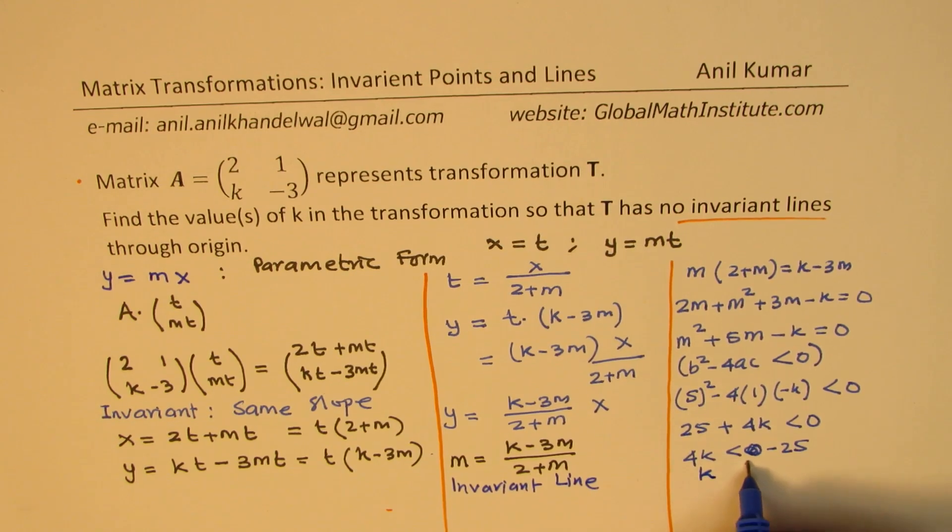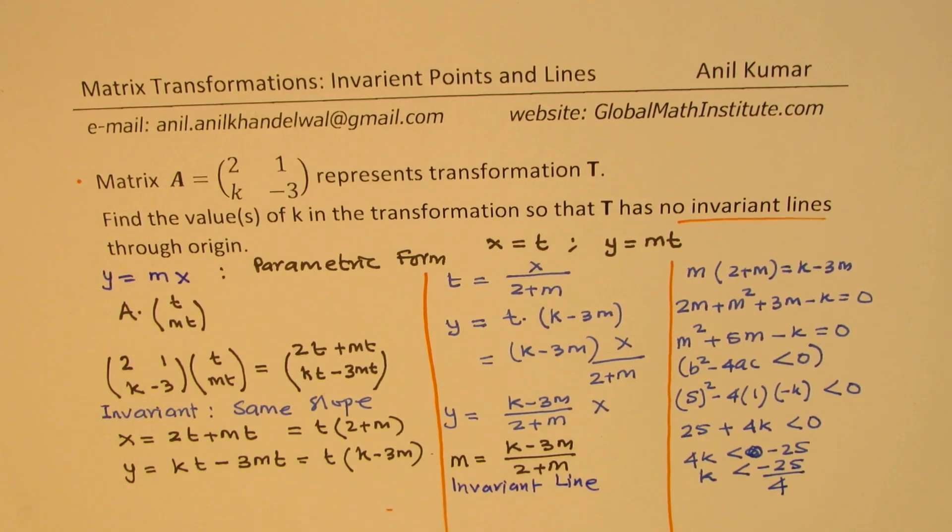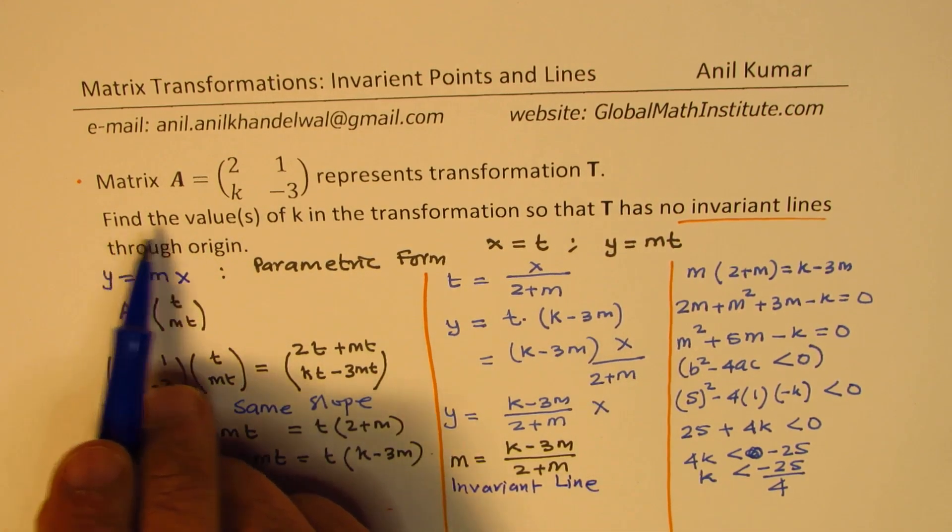So that means k is less than minus 25 over 4, which is 6 point something. So if you're looking for integer values, find the values. We'll write k as k belonging to integers. So we're looking for integer values in such cases.